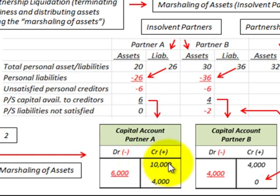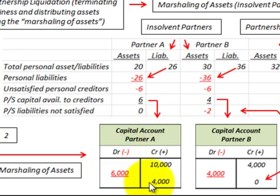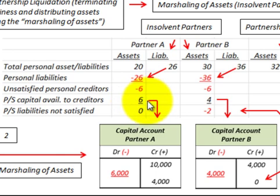Using the marshalling of assets doctrine, we can only use the unsatisfied personal creditors amount up to what's available in the capital account. Partner A has $10,000 in their capital account, and their liability to personal creditors is $6,000, so we have enough to cover those liabilities. We reduce the capital account by $6,000, leaving $4,000. Partnership liabilities not satisfied would be zero — all liabilities are satisfied.